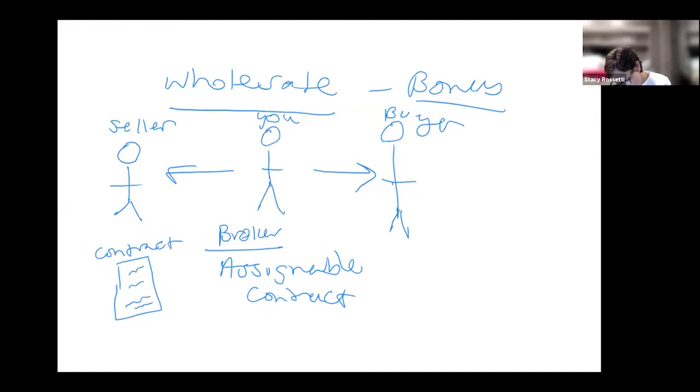Then you have another contract. This is the seller to you, and this is you to the buyer. You could do an assignable amendment or whatever, but I usually just do two separate contracts to keep it clean.